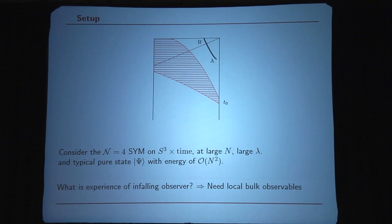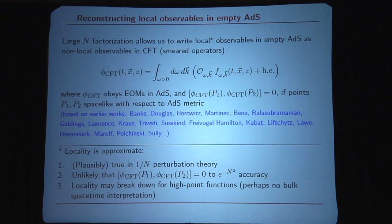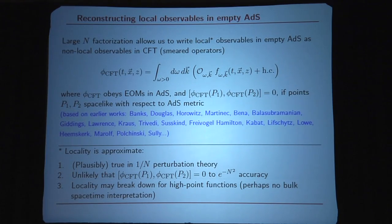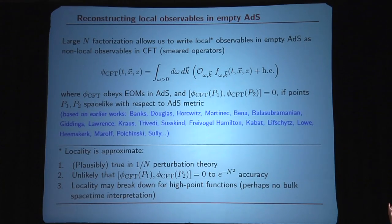In order to do that we need to understand how to build local observables from the point of view of the boundary. This is a hard question in quantum gravity, but the situation is better if we talk about the large N limit and local observables around a particular background. Using large N factorization, based on the work of many people, it is possible to write local observables in AdS as non-local observables in the CFT — you take the free modes of the single-trace operators and multiply them with wave functions which are solutions of the equations in the bulk. In this way you build an operator which behaves like a local field in higher-dimensional AdS spacetime, obeying the equations of motion and having vanishing commutator for spacelike-separated points.